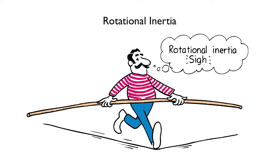Why does a tightrope walker want a long pole to help his balance? Answer: he wants more rotational inertia. That is, more resistance to falling sideways.